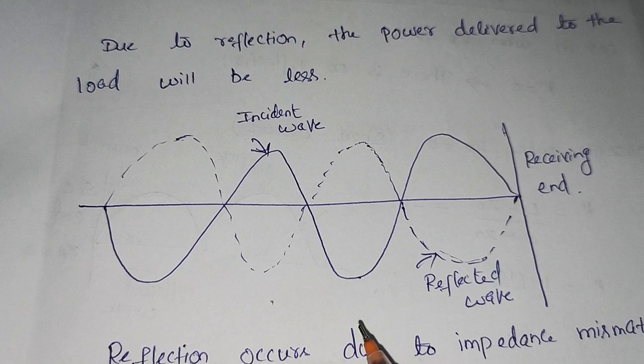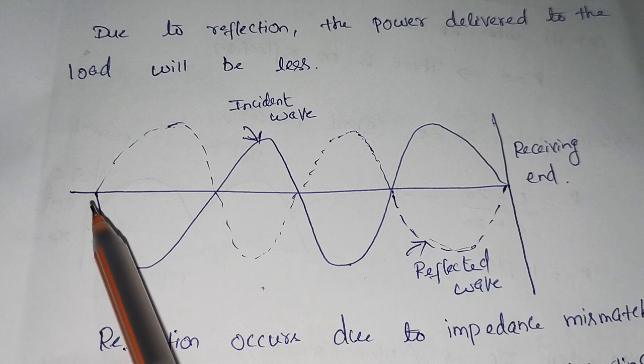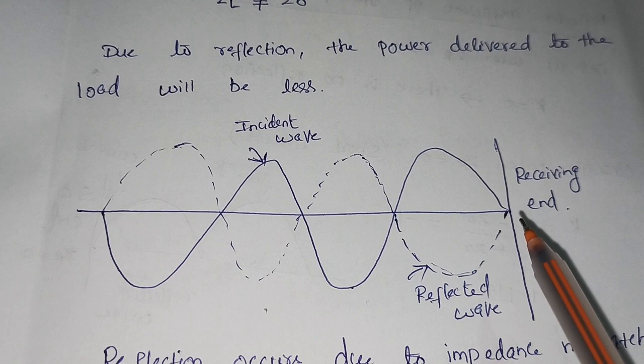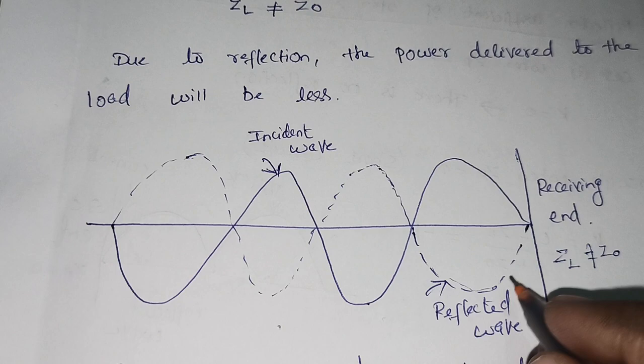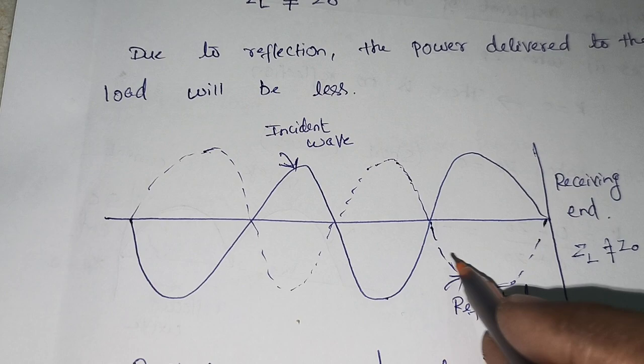This waveform explains the incident and the reflected wave. The incident wave is the wave travelling from the source towards the receiving end. Whenever the condition that ZL and Z0 are not equal persists, there will be reflection taking place from the receiving end and you will get a reflected wave propagating from the load towards the source.